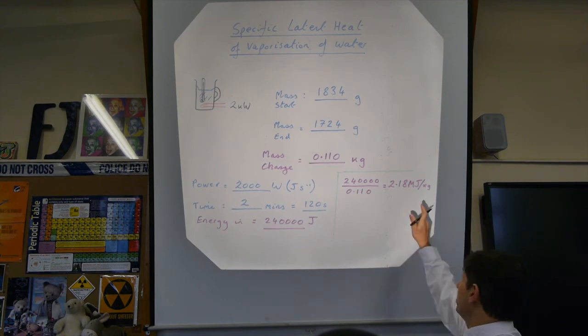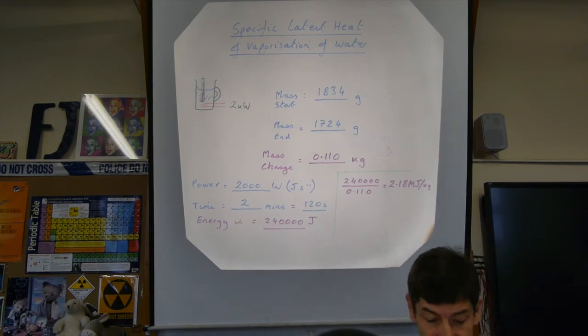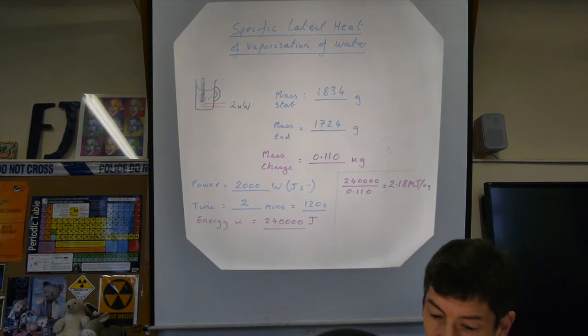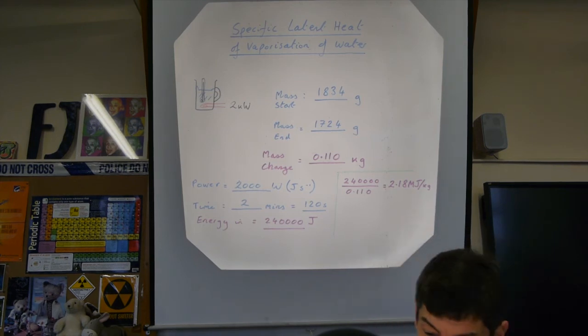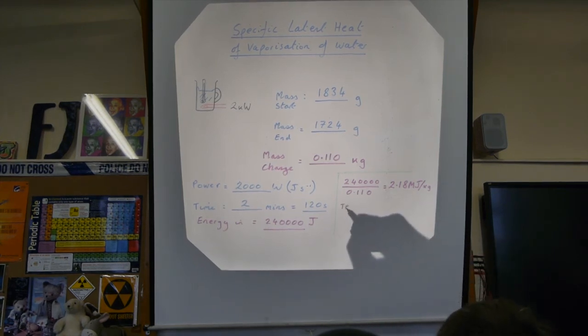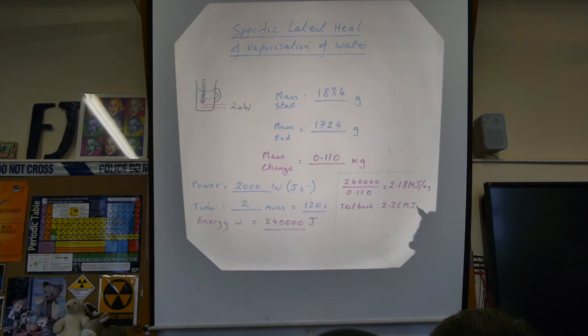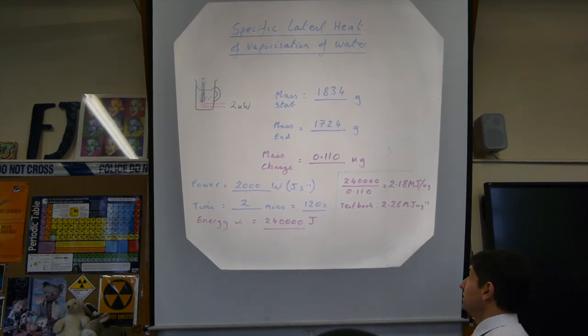It's quite interesting if we compare that to the textbook value. The textbook value for the specific latent heat of vaporization of water is 2.26 megajoules per kilogram. I'll write it like that, slightly better way of writing the units.